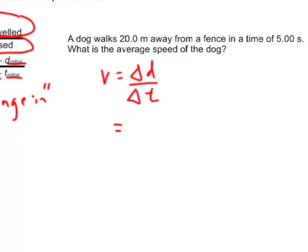If we just substitute our values in here, the distance changed by 20.0 meters. The time changed by 5 seconds. 5 seconds went by on the clock. What is 20 divided by 5? Hopefully you'll realize that that's going to be 4.0.